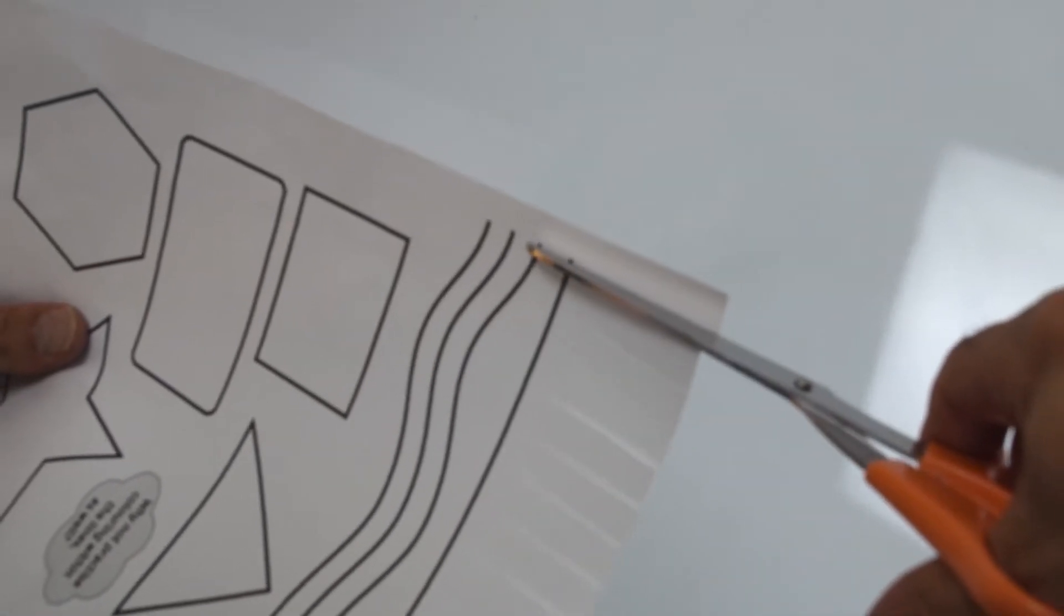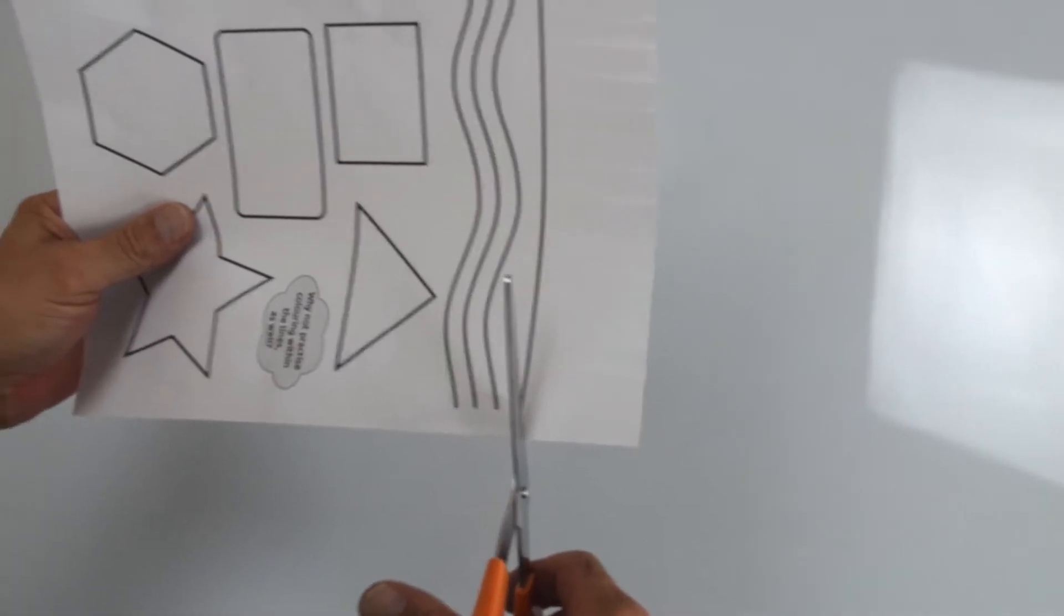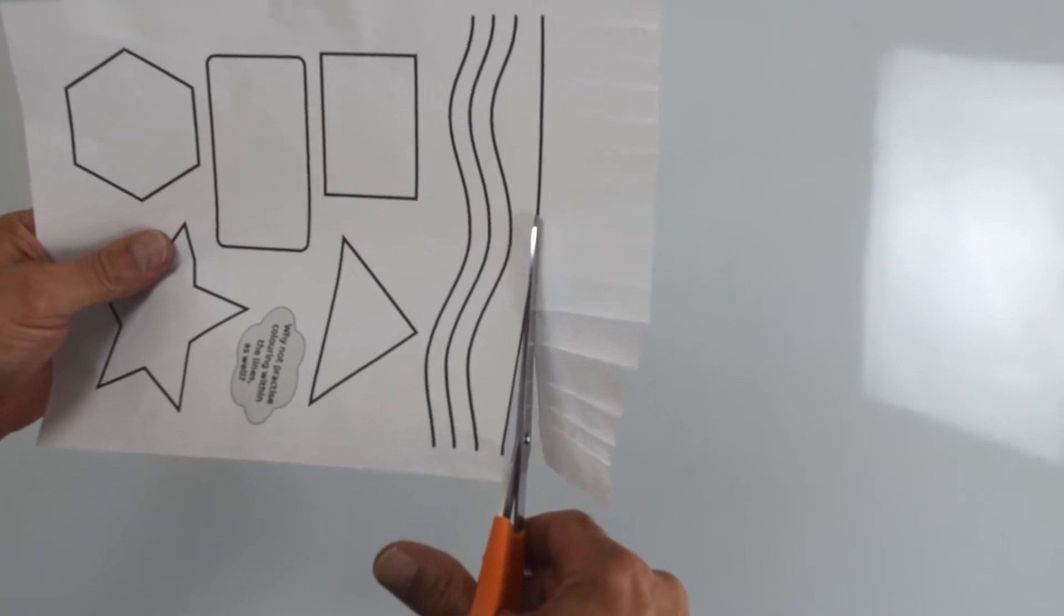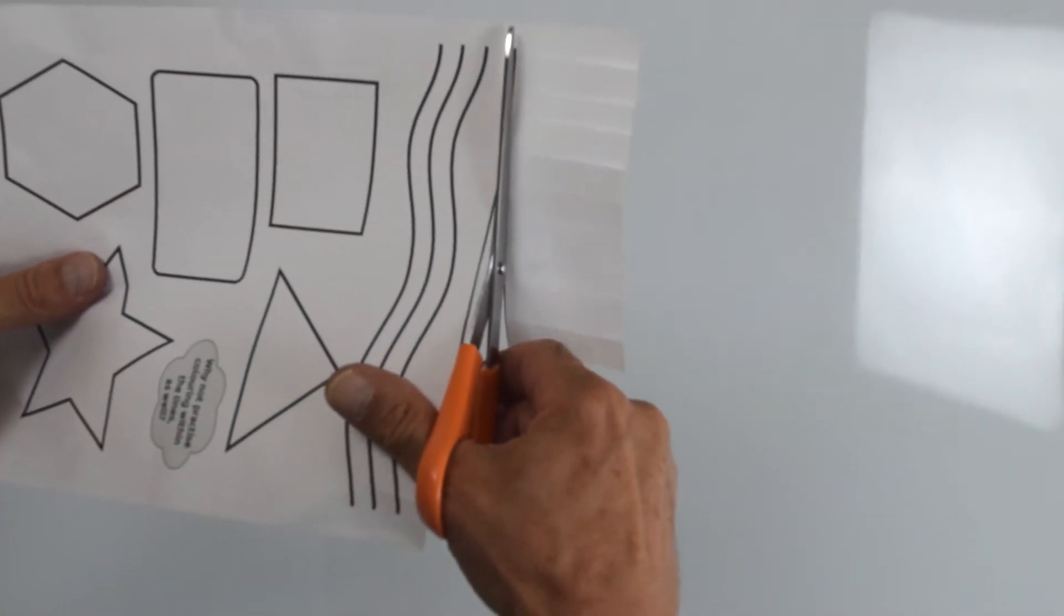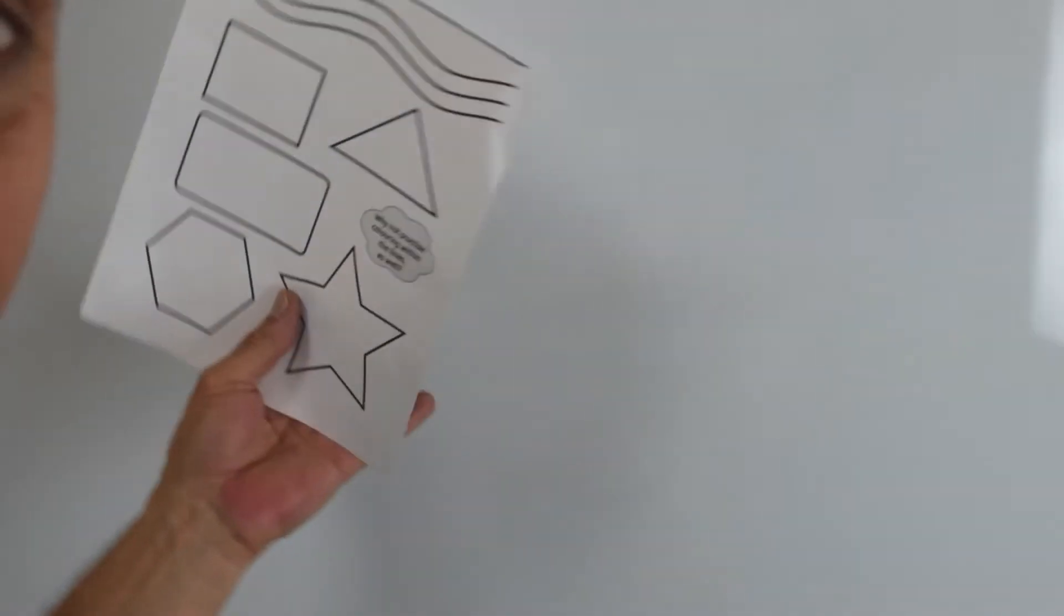Because when you've practiced lots of cuts towards the line, then you can cut actually along the line. Closing the scissors but not completely. Try and follow the line and guide the scissors along the line. And then your confetti drops to the floor. Voila!